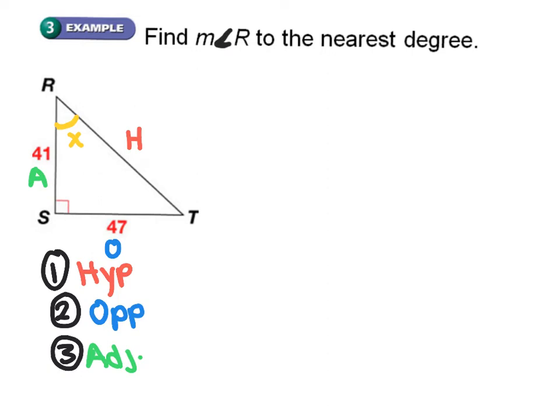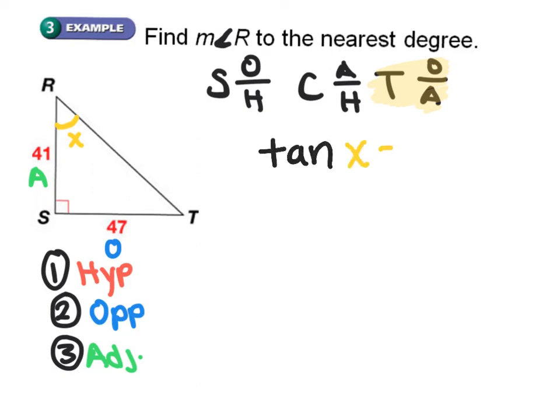Since there isn't a measurement on the hypotenuse, I can erase the H, which leaves me with opposite and adjacent. Using SOHCAHTOA, since we have opposite and adjacent we are going to use the tangent relationship. If I set it up, I'll have tangent of x equals the opposite which is 47 over the adjacent which is 41.